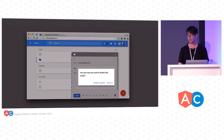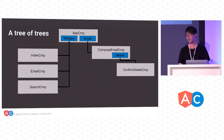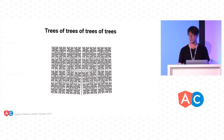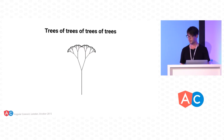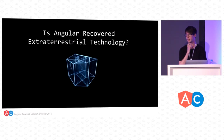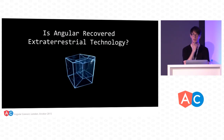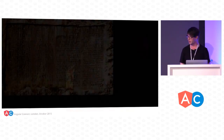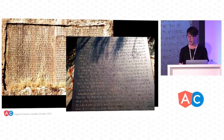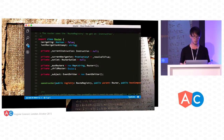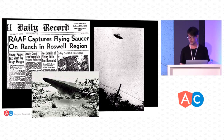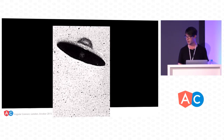One thing we could do is implement a modal to confirm whether you're going to delete an email — just another auxiliary route inside our compose email component. You can think of it as a tree of tree of tree of trees and so on. And this is what got me thinking: is Angular recovered alien technology? Who else would be able to think in this many dimensions? Was Angular actually just scraped off ancient alien tablets? Did it come from a flying saucer wreck? If you enhance, you can see Angular.